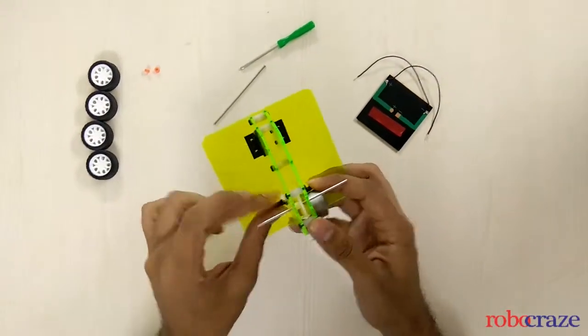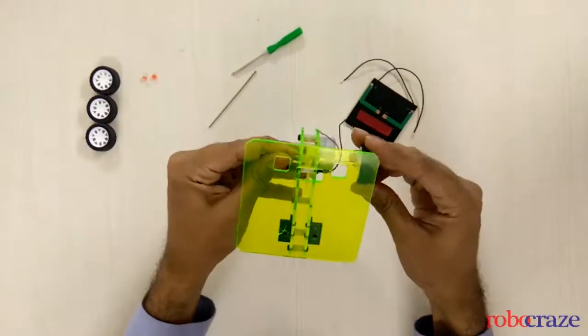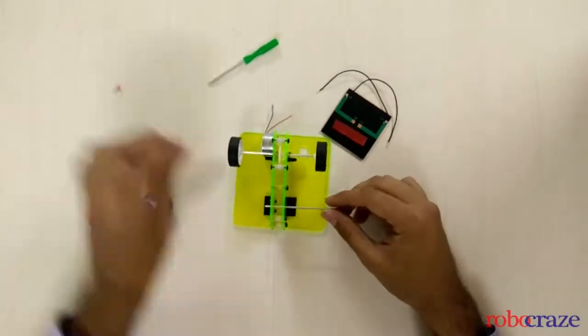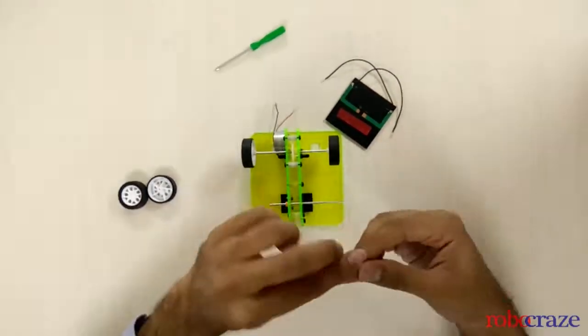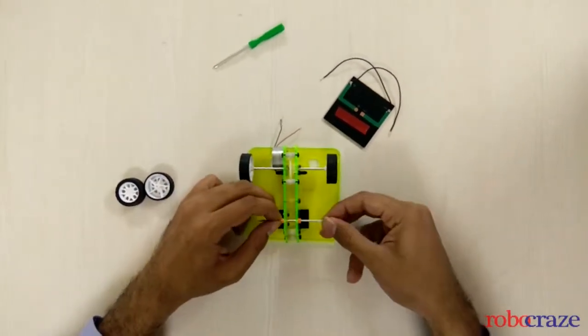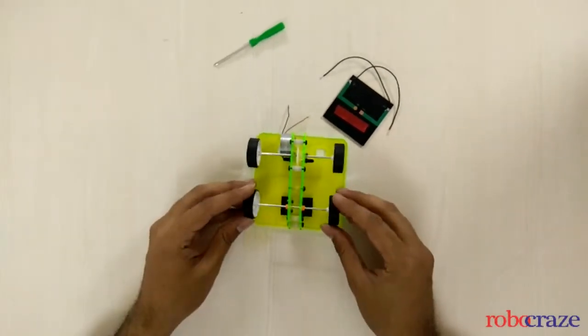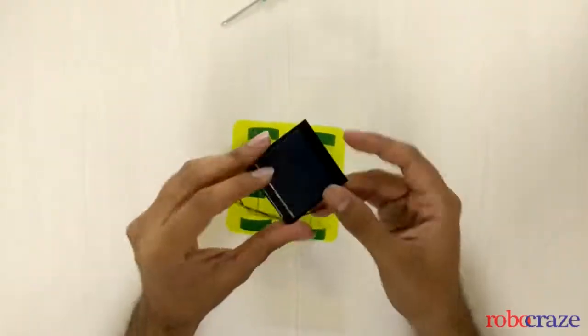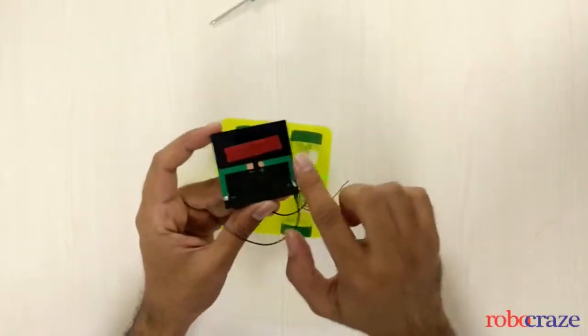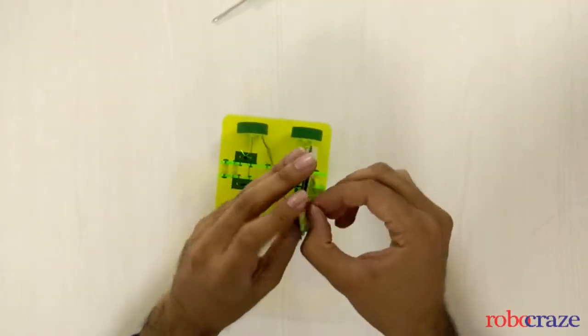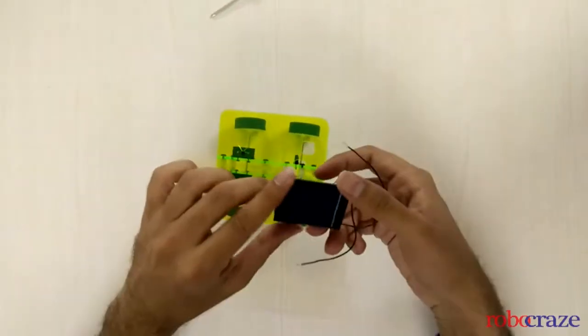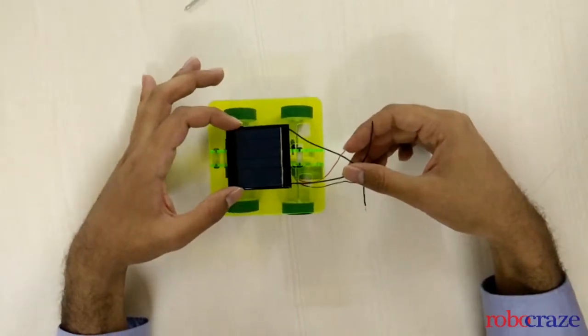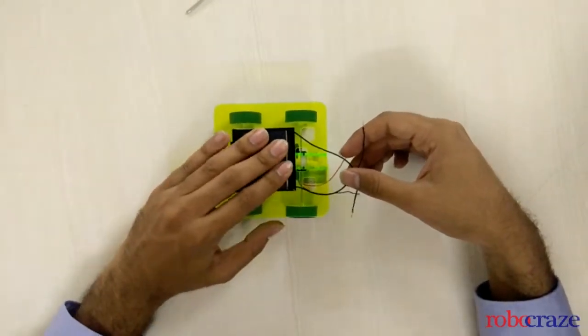Now all four wheels are placed and this is the solar cell, positive and negative. We simply remove the sticker and place it on the top. The positive and negative wires are connected to the corresponding wires of the motor.